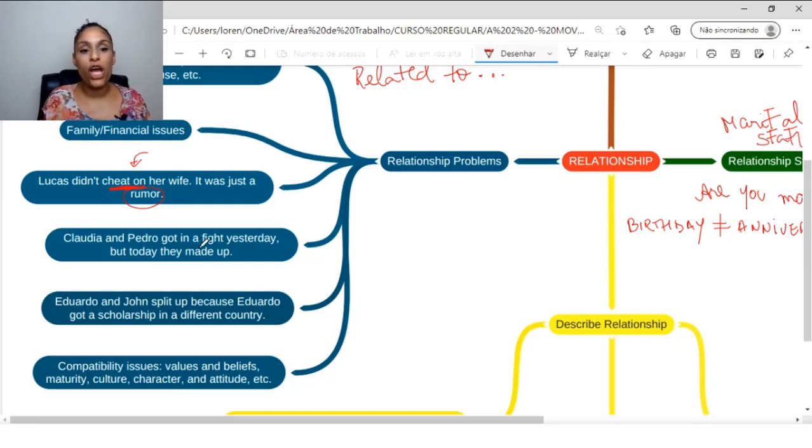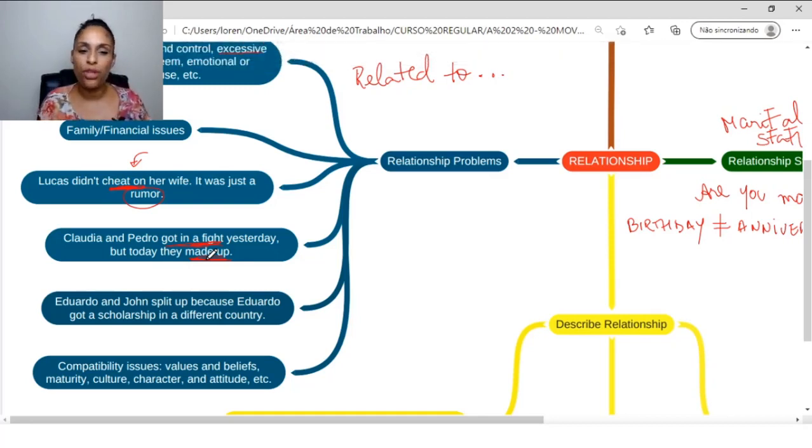Cláudia and Pedro got in a fight yesterday. But today they made up. Made up. So, got in a fight. So, they got into a fight. And not necessarily punching, no. Sometimes just arguing. In a very informal way we can use. Or you can say that they had an argument. So, argue means to argue in this sense of bickering. And made up means to make up. The hair flies. So, they made up. They already made up. And notice that the verb made here is in the past. Because the present is make. So, past. They already made up.